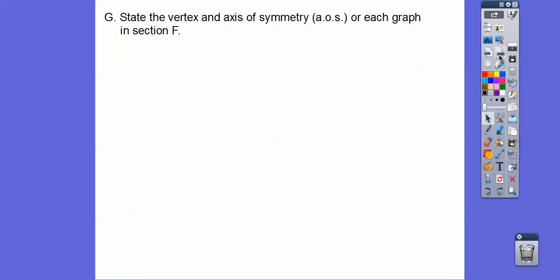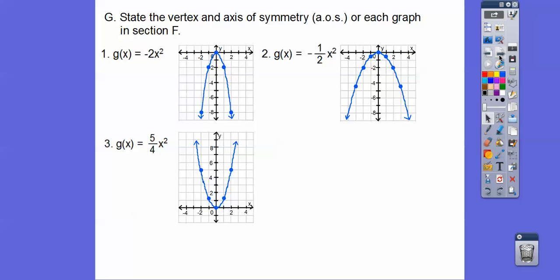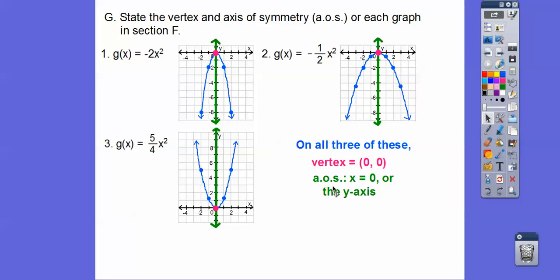Now let's state the vertex and axis of symmetry for each graph. The vertex on all of these is (0, 0), since they all pass through the origin. The axis of symmetry on all of them is the y-axis, which has the equation x equals 0. When the parabola moves, the axis of symmetry will be x equals the x-coordinate of the vertex.